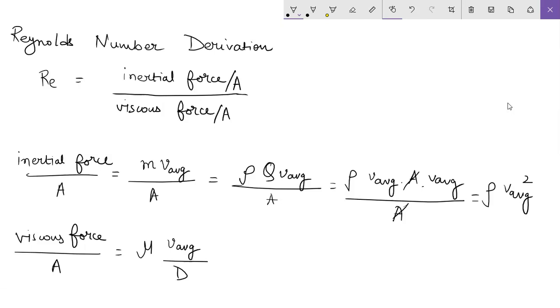And you will get rho v average square divided by mu into v average by D, and this will give you D rho v average by mu.